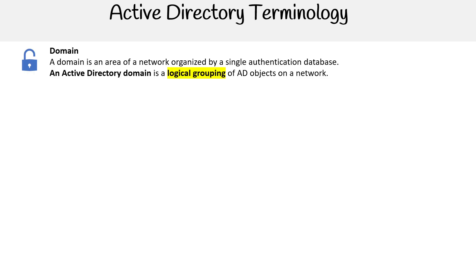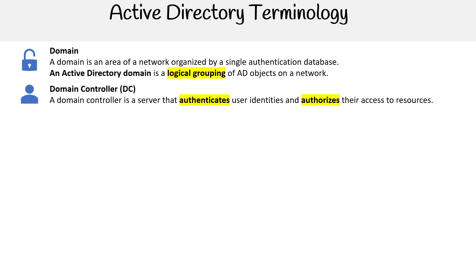The first term is a domain. A domain is an area of a network organized by a single authentication database. An Active Directory domain is a logical grouping of AD objects on a network. The term domain is not unique to Active Directory — other directory services also have this concept of a domain.